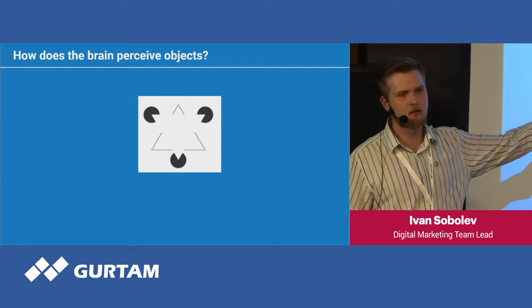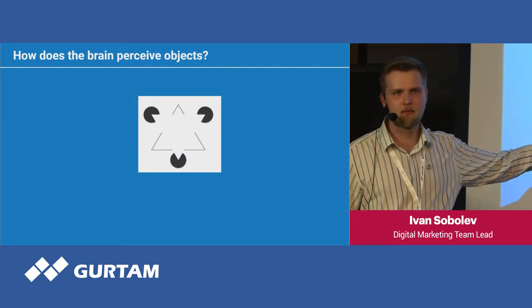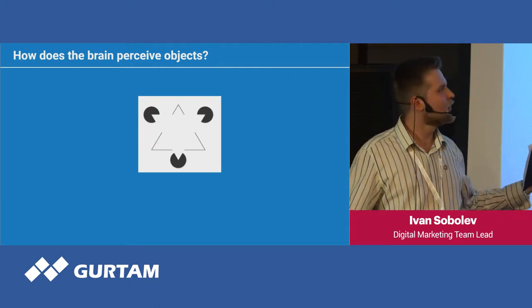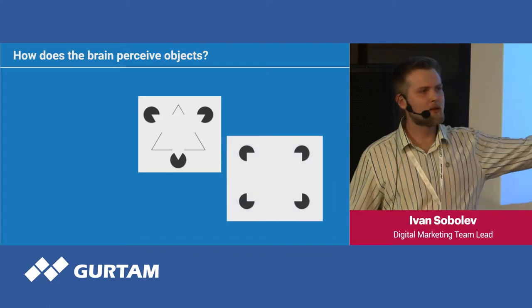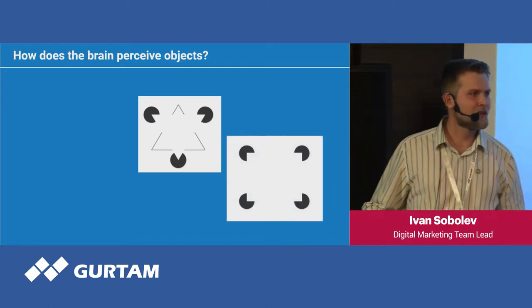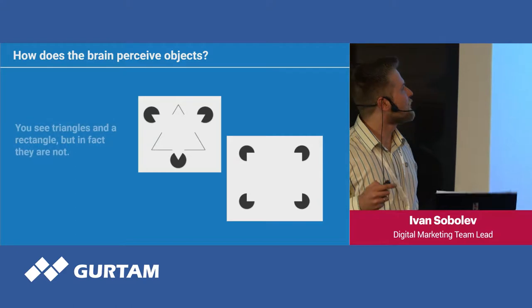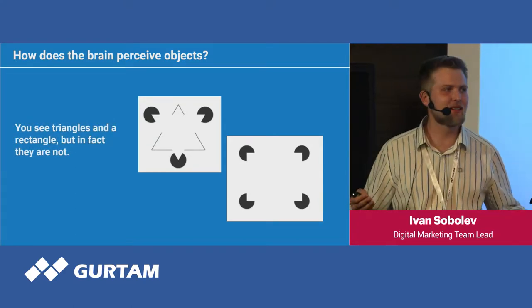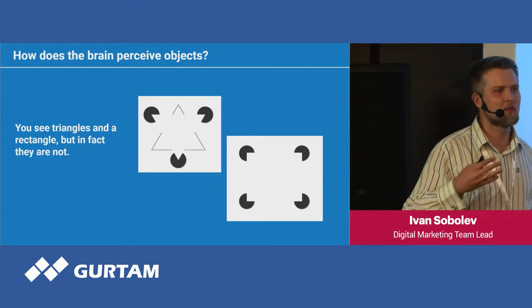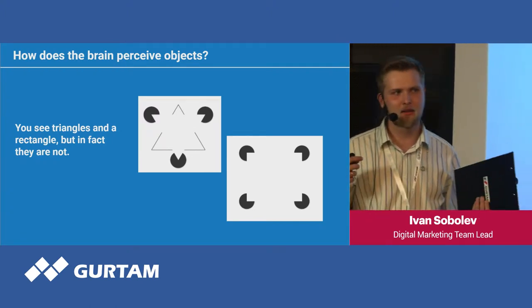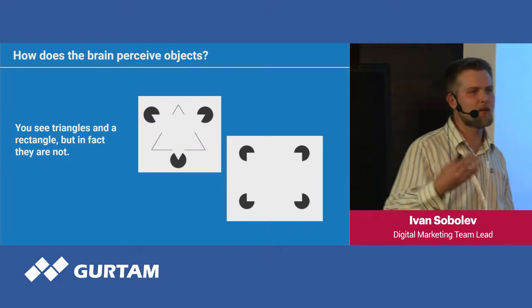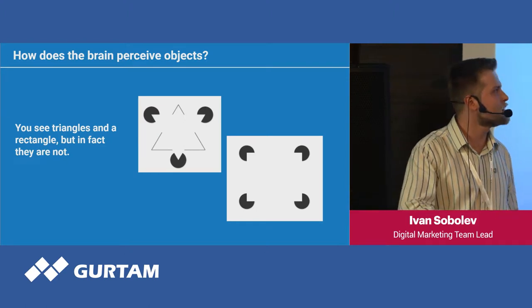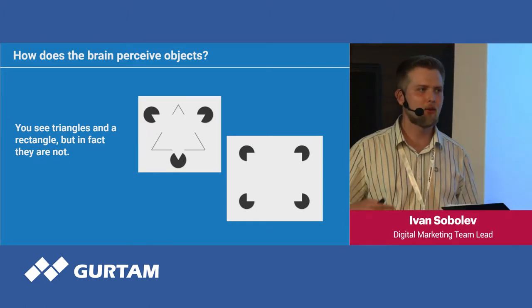I'll show you an example. On this image you can see triangles, squares, rectangles — but in fact they are not. That is basically how our brain perceives information. You have seen simple lines and your brain processes this information and works with it.